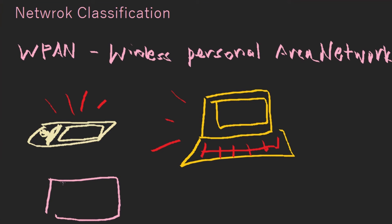Another example of a WPAN is a wireless printer. Your computer sends information to the printer, the printer receives it and prints whatever you wanted. And that's basically WPAN in a nutshell. Next time I'll tell you what a VPN is — see you guys, adios!